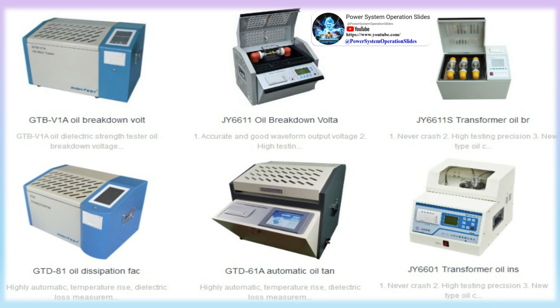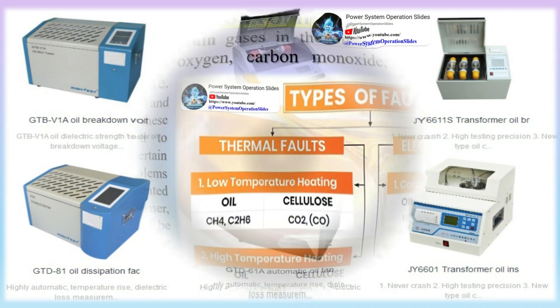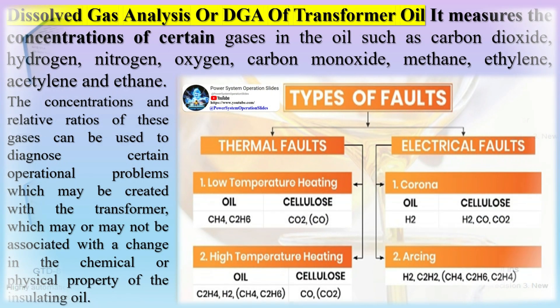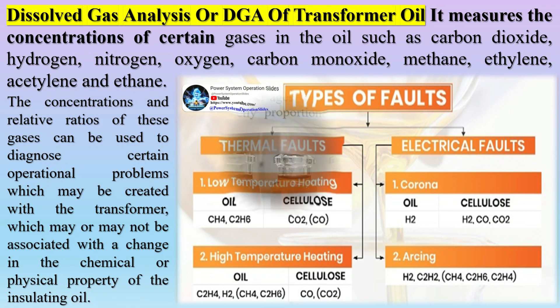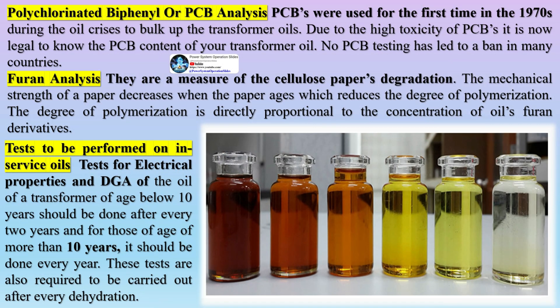Tests to be performed on in-service oils: tests for electrical properties and DGA of the oil of a transformer under 10 years of age should be done every 2 years, and for those over 10 years of age, every year. These tests are also required to be carried out after every dehydration.